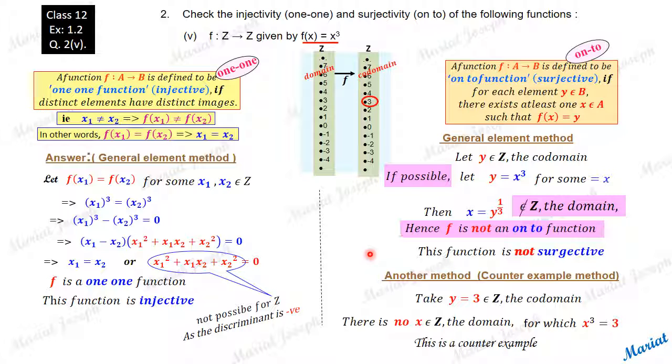Remember, to prove a definition is not followed by a given example, we can use a numerical example which goes against the definition which is called a counter example. But when we want to prove the definition is satisfied, we cannot show a numerical example and prove. Numerical example, the counter example, is used only to show the definition is not followed.